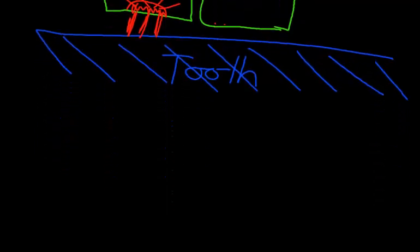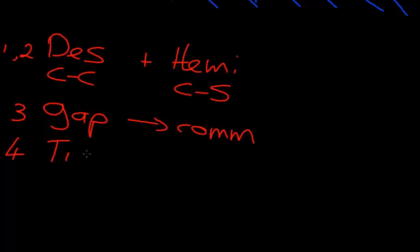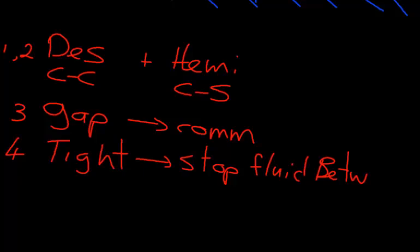So to summarize, we've talked about four different junctions. Desmosomes and its partner hemidesmosome. And the real difference here is this is between cells. And this is between a cell and a surface. So that is one and two. Another junction we've talked about is gap junctions, which is allowing for communication. And the fourth junction we've talked about is tight junctions. And tight junctions stop fluid between. Stop fluid from flowing between. So these are the four major junctional types that you see between cells.